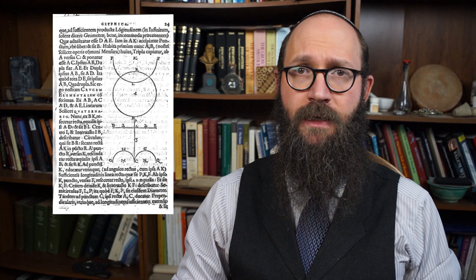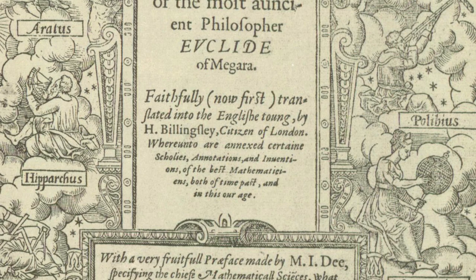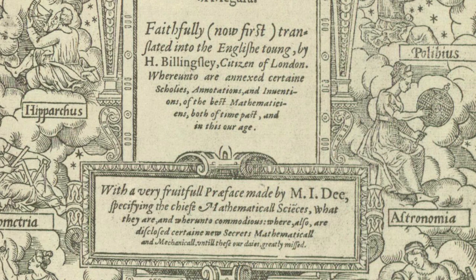Despite the grandiose claims made by Dee in his 1564 Monas Hieroglyphica, we can say that they never quite panned out. In fact, when Dee published the work, the alchemist Libavius openly mocked his claims. It seems that Dee intended to write a rebuttal of Libavius, but never did. It's as if Dee, in some sense, had moved on from the grand project of the Monas Hieroglyphica. In fact, we don't even get a mention of the potential of the Monas Hieroglyphica in what would be the most conspicuous possible place — Dee's preface to the first English edition of Euclid's Elements, the classic textbook on geometry.